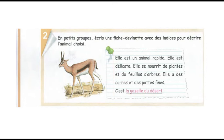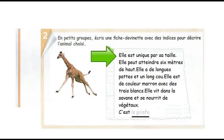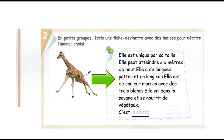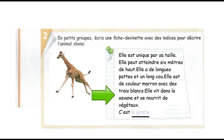J'écris une fiche devinette avec des indices pour décrire l'animal choisi. Je choisis la girafe. Elle est unique par sa taille. Elle peut atteindre six mètres de haut. Elle a de longues pattes et un long cou. Elle est de couleur marron avec des traits blancs. Elle vit dans la savane et se nourrit de végétaux. C'est la girafe.